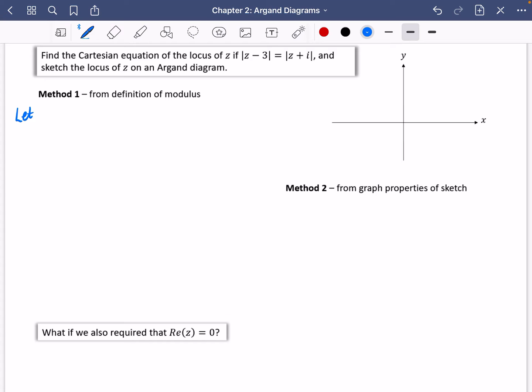So first of all, we're going to let Z equal X plus iY. And then that's obviously going to show that Z minus 3 would be X minus 3, collecting the real parts together, plus iY. And then Z plus I would be X plus Y plus 1I. Hopefully you can spot how you can go pretty quickly to these versions that we've got here.